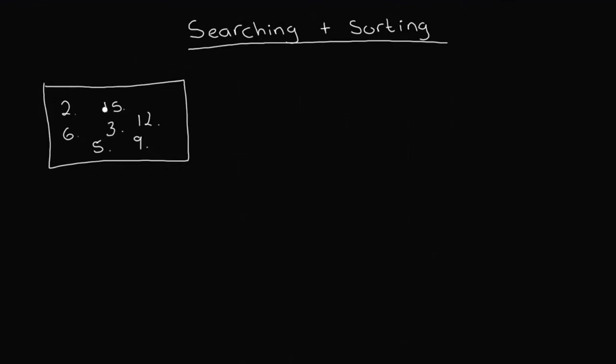Now we want to perform a search. So we want to search for one of the numbers, we want to search for number three. As humans, we can look at all these elements and then pick out the number three. But unfortunately for computers, it doesn't work like this. Rather than having these numbers in a box, we usually have the set of numbers in a data structure called an array. So it would look something like this: two comma fifteen comma six comma three comma twelve comma five and comma nine. And I'm just going to put square brackets around all of our numbers.